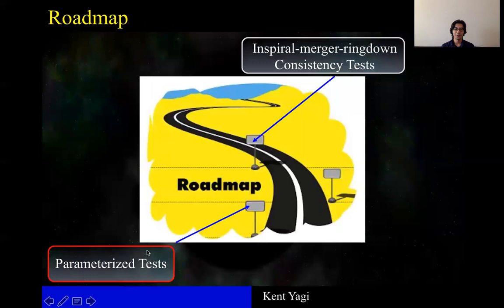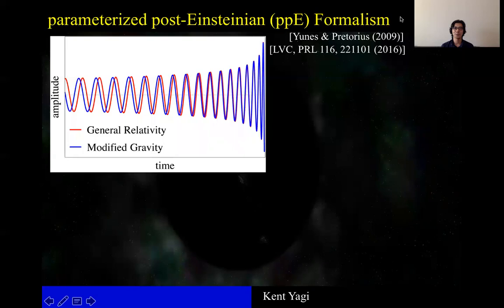There are several formulations proposed, but the one that I'd like to introduce today is called parameterized post-Einsteinian formulation, or ppE formalism for short. And this is the schematic picture showing the gravitational waveform. The one in GR is in red, while the one in a modified theory of gravity is in blue.